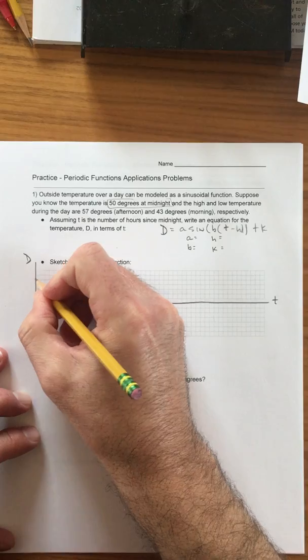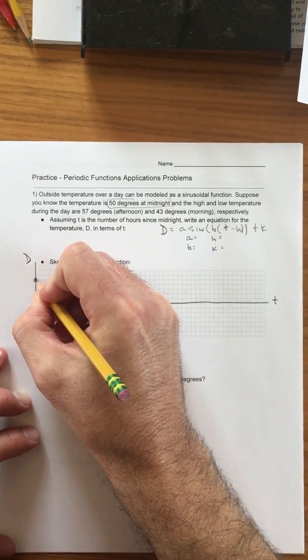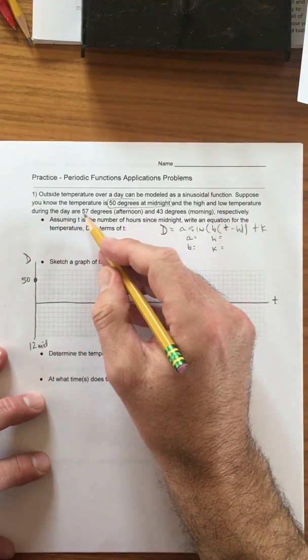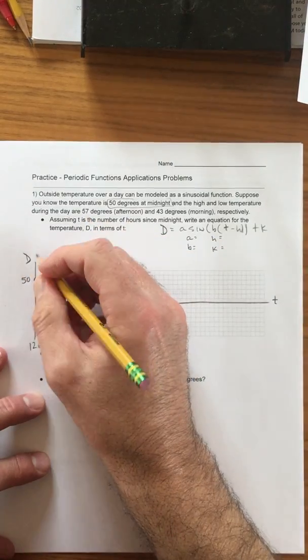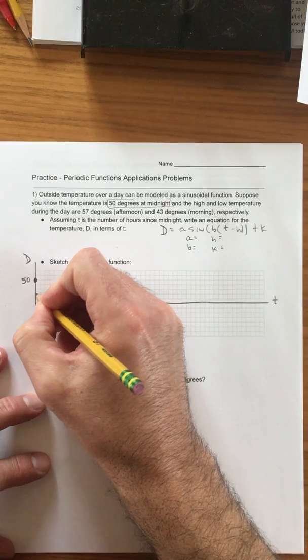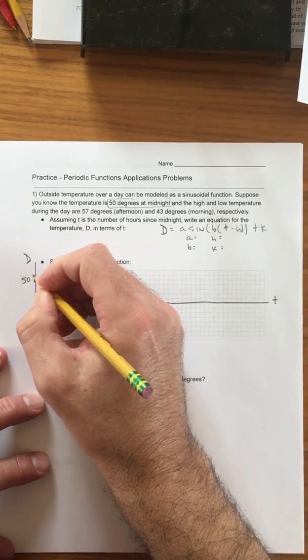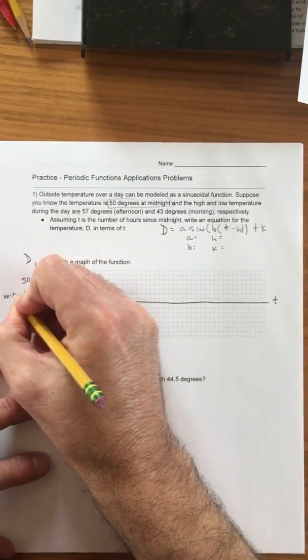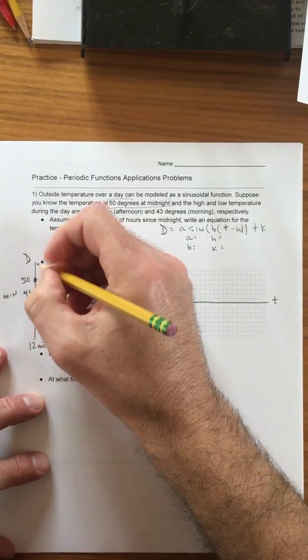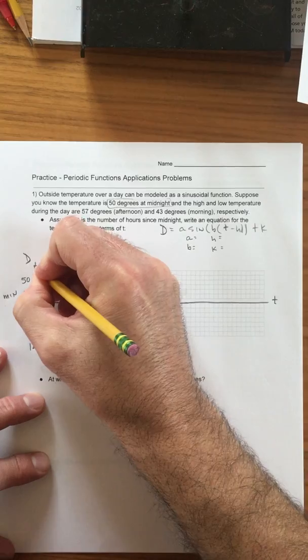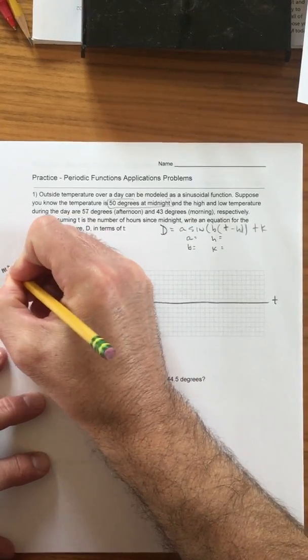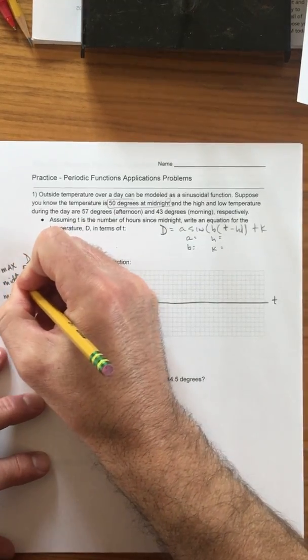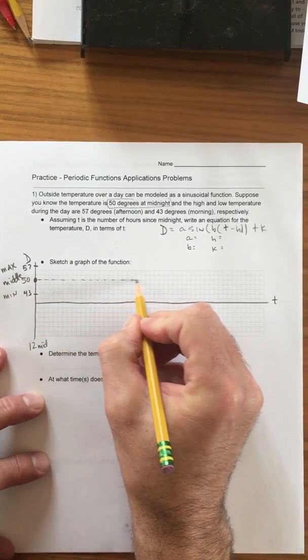There's a high and a low temperature during the day, 57 and 43. This is not going to be to scale. I'm just going to say that's 43 which is the min and then the max is 57. So we'll just say the max is right there. What I notice is we're up seven and down seven, so that is the middle right there. I'm gonna just put a dash line there.